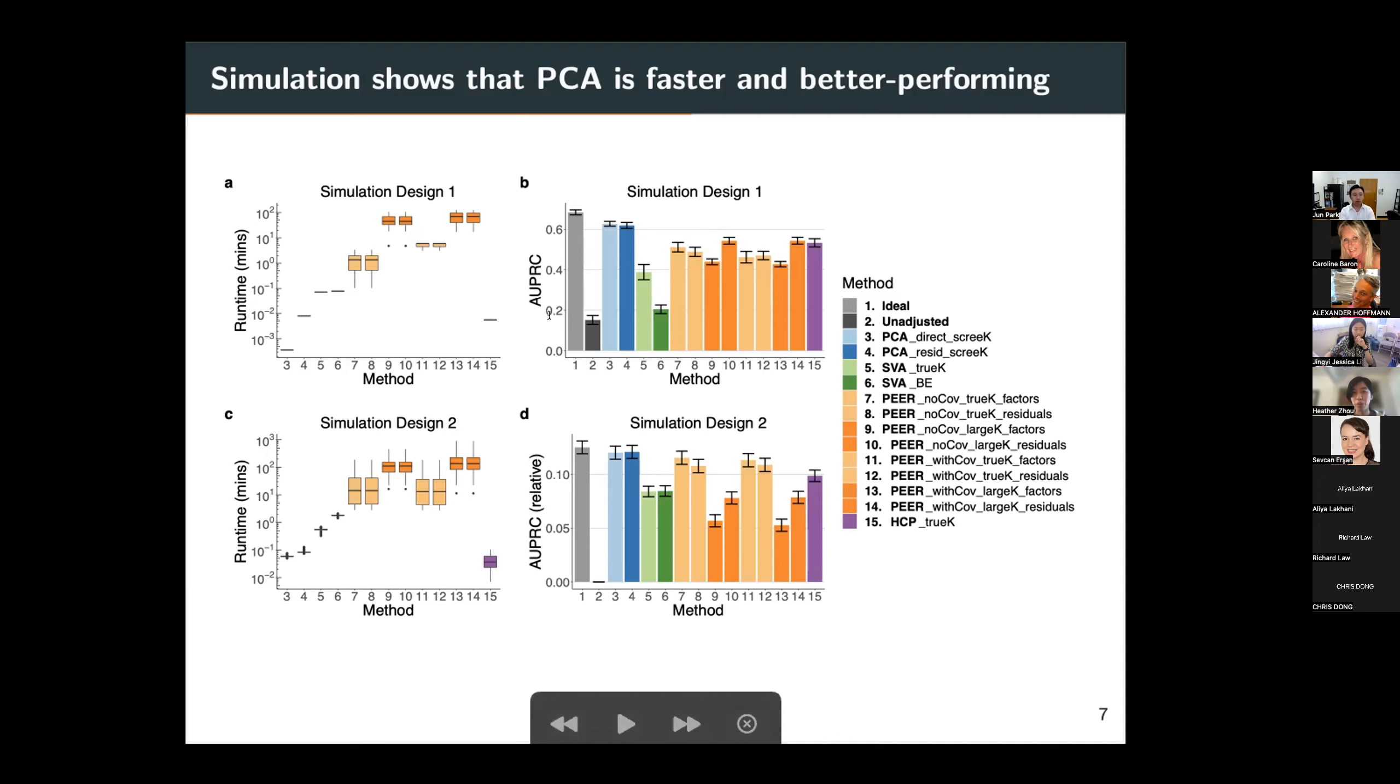The last position corresponds to HCP. It's also quite fast and SVA is in the middle. And then in terms of performance, accuracy of identifying QTL relations, which we measure with the metric area under the precision recall curve, AUPRC, it shows that PCA is able to outperform all the other methods and brings the AUPRC quite close to ideal, where we assume that the hidden variables are known. And for contrast, we show as unadjusted, the AUPRC of not accounting for any hidden covariates.